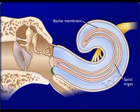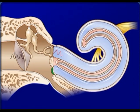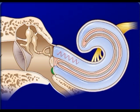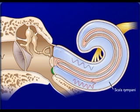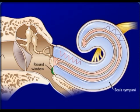When the vibrations reach the perilymph in the scala tympani, they travel to the round window where they are dampened.